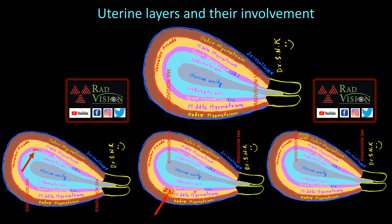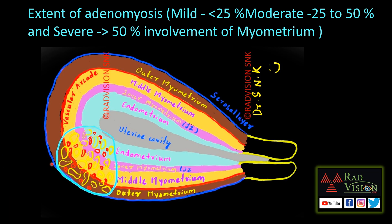These are the inner, middle, and outer myometrium layers. Regarding extent of adenomyosis: if less than 25% of the myometrium is involved it is called mild; if 25 to 50% is involved it is called moderate; and if greater than 50% of the myometrium is involved, it is called severe adenomyosis.